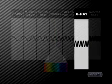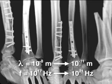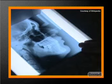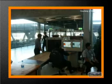Next, we have X-rays. X-rays have wavelengths between 10 to the minus 8 meters and 10 to the minus 11 meters, with frequencies ranging between 10 to the 17 hertz and 10 to the 21 hertz. Because X-rays have a very short wavelength, they are able to penetrate many things. They can be detected on photographic paper and are used to take pictures of the bones of the human body. They also have security applications, such as scanners at airports.